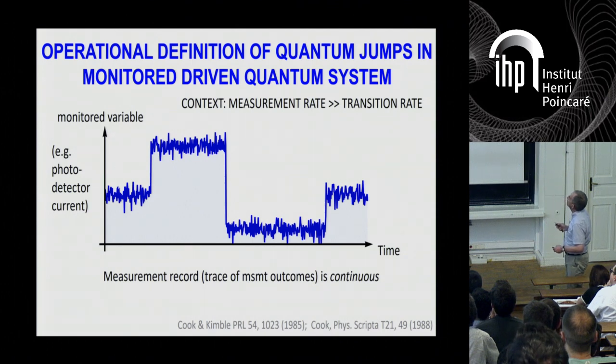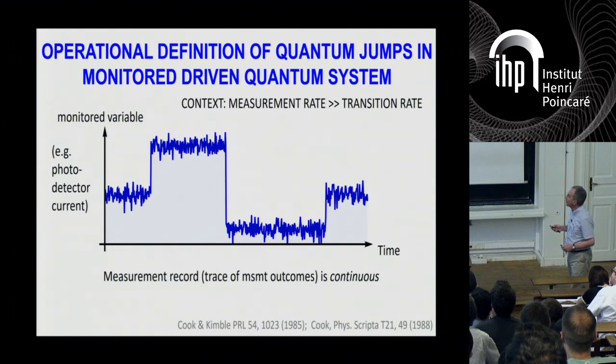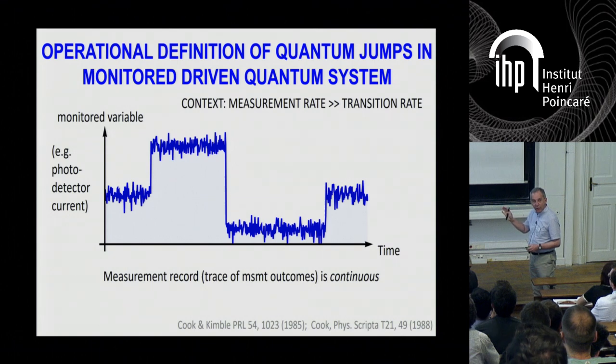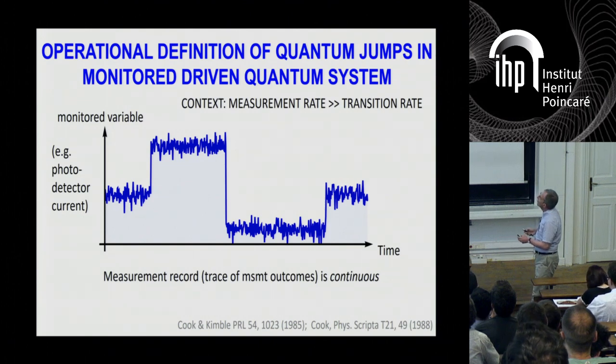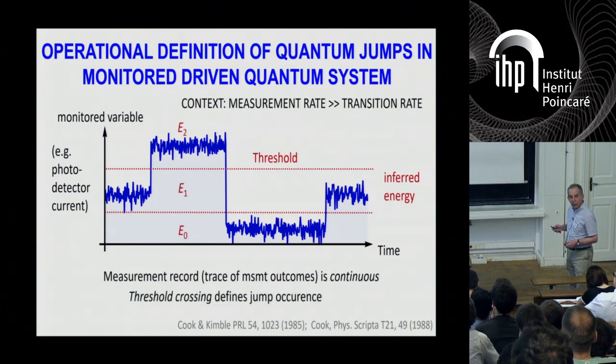So for driven quantum system that is monitored, and monitored with a very strong rate, the measurement rate in that context is much stronger than the transition rate. Then, for this monitored variable here, the signal will look like a series of plateaus due to the quantum Zeno effect. And there will be abrupt fronts between these plateaus. The signal is perfectly continuous, but there are these strong fronts here. So if your signal-to-noise ratio is good enough, if the fluctuations around the plateau are small enough, you will be able to pass thresholds between the plateaus.